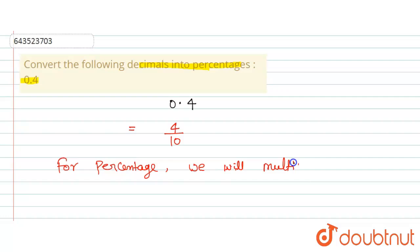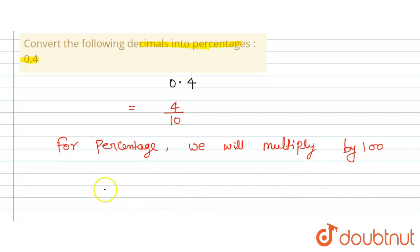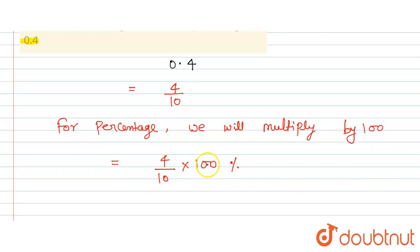Okay, so this can be written as 4 upon 10 into 100 percent. Now 10 will be canceled out, so here only we have 4 into 10 percent.